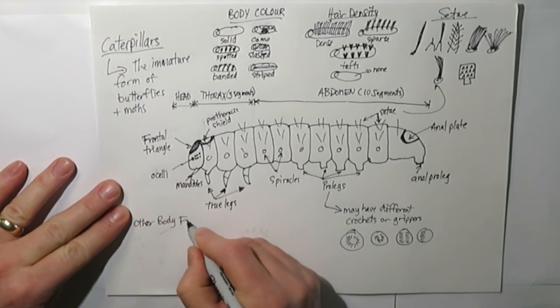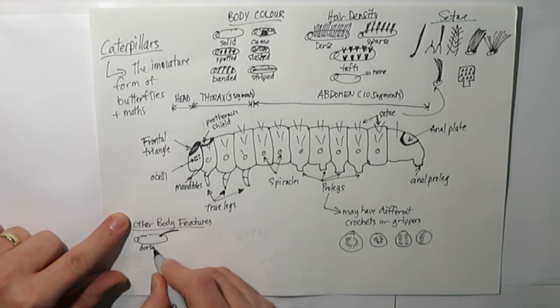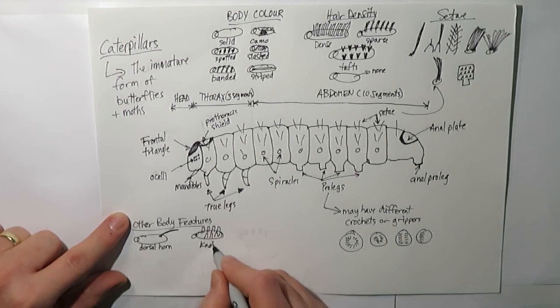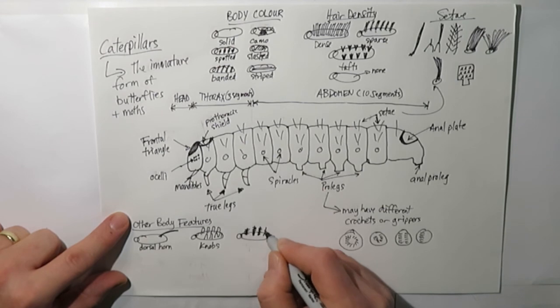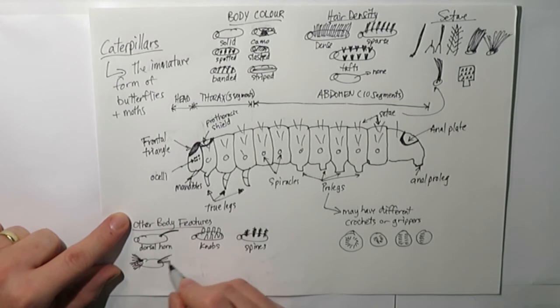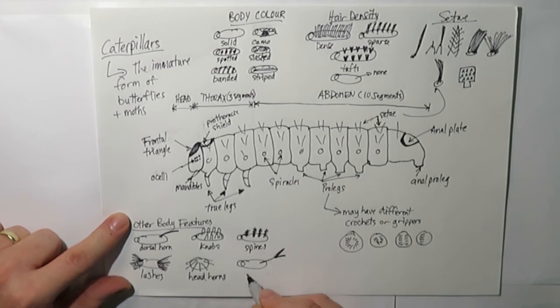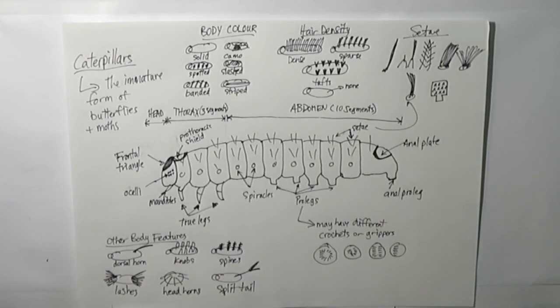Other body parts or features that you might use to differentiate between different caterpillar species: they might have a dorsal horn in the case of something like a hornworm. They might have knobs. They might have spines. They might have what's called lashes where they've got dense hair at both ends. Their face might have head horns on that frontal triangle, they might have a split tail. There's all sorts of different features you can use to look at and differentiate between caterpillars.